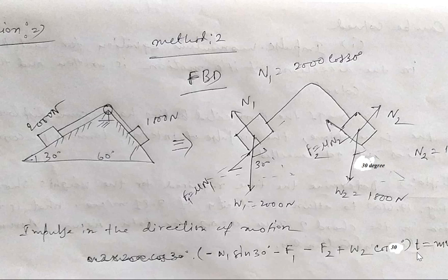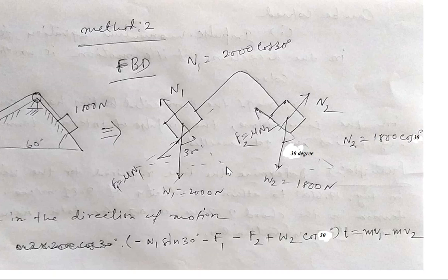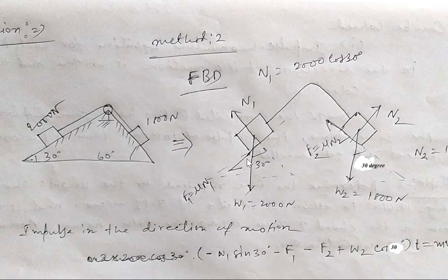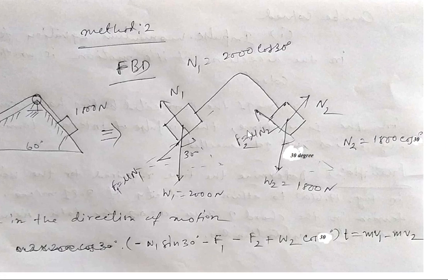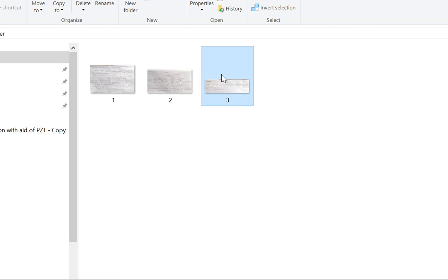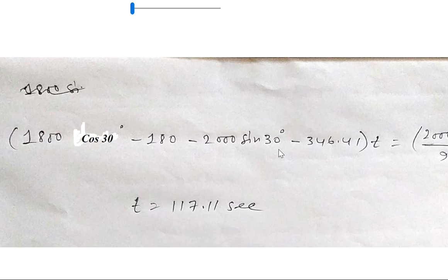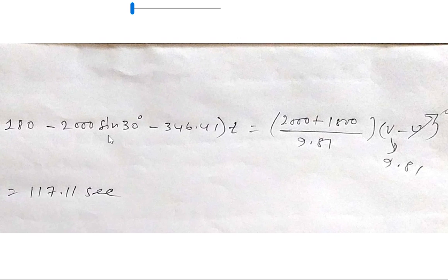Multiplying the net force summation by the unknown time t gives the total impulse, which equals the change in momentum according to the impulse-momentum principle: m·v1 − m·v2, where v2 is the initial velocity and v1 is the final velocity. Substituting all known values, we obtain t = 117.11 seconds.